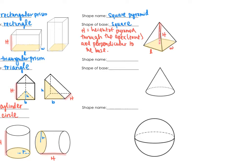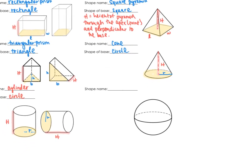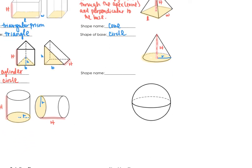The next shape is a cone, and the shape of the base is a circle. On the circle, we look at the radius, and then there's the height, just like the previous shape. This last shape is a sphere — it's in its own category because there is no base; it's circular all around with no flat parts. The only dimension we worry about in a sphere is just the radius.